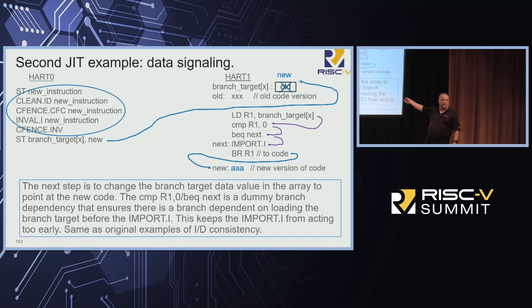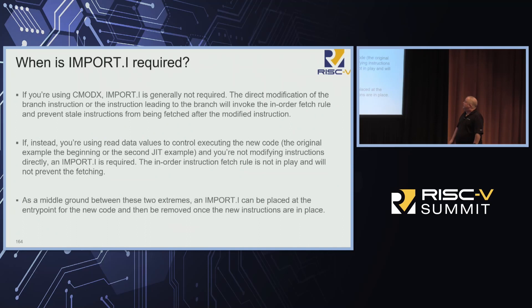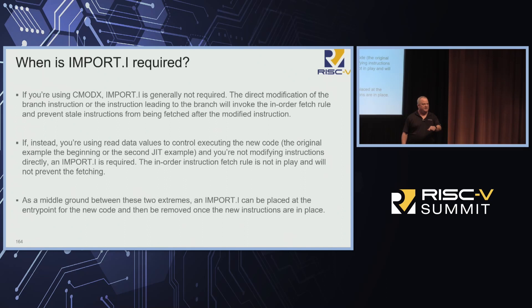One of the things import.I uses to know not to fire too early is resolving all branches. So whenever you're modifying data you have to look at the data and have a branch based on that in front of the import.I. When is import.I required? If you're doing C mod X like in the first example you don't need import.I because the in-order fetch rule saves you. But if you're going through data — modifying a jump table and jumping to a value out of data — that doesn't come through the instruction machinery, so the in-order fetch rule won't save you. You actually have to put the import.I in.